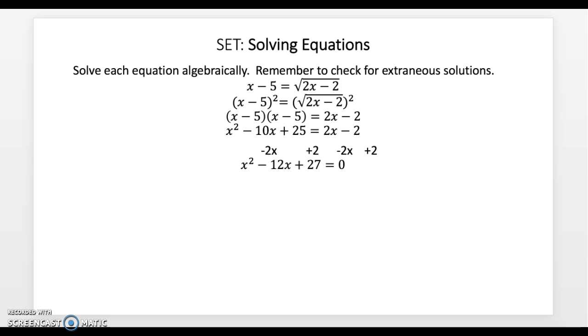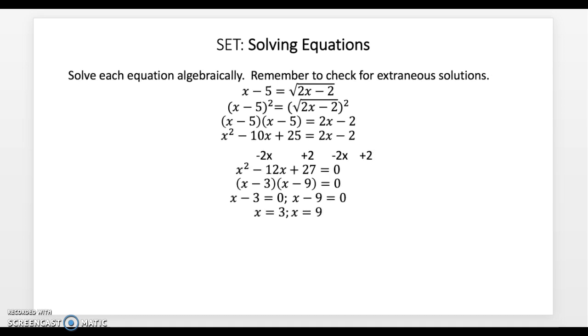Leaving us with x squared minus 12x plus 27. And we can factor that, giving us x minus 3 times x minus 9, which makes it nice and easy to find our x-intercepts where we set each factor equal to 0 and solve for the x.